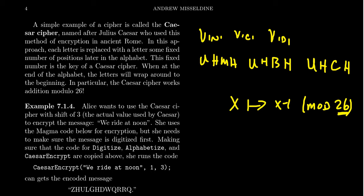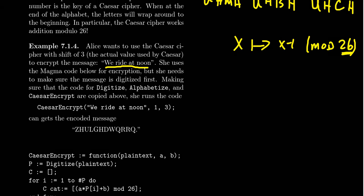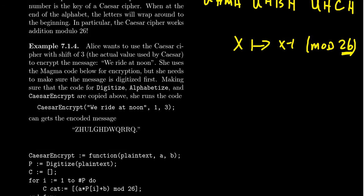Let's look at another example. Suppose Alice wants to use the Caesar cipher with a shift of three, which was actually the method Caesar himself used. Imagine Alice wants to send the message 'we ride at noon' to Bob. This message has a dark, sinister tone — we don't know the context, but she doesn't want Eve to receive it, so she's going to encrypt it using the Caesar cipher.